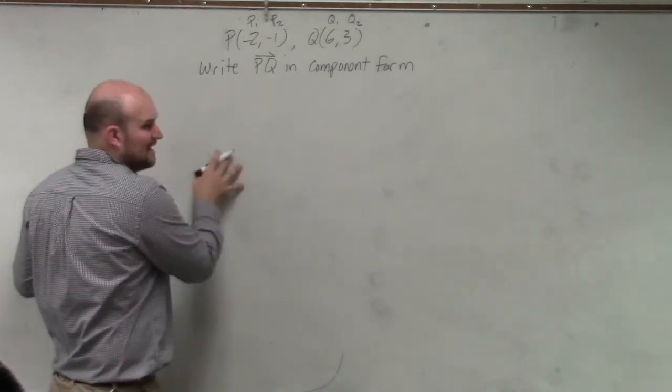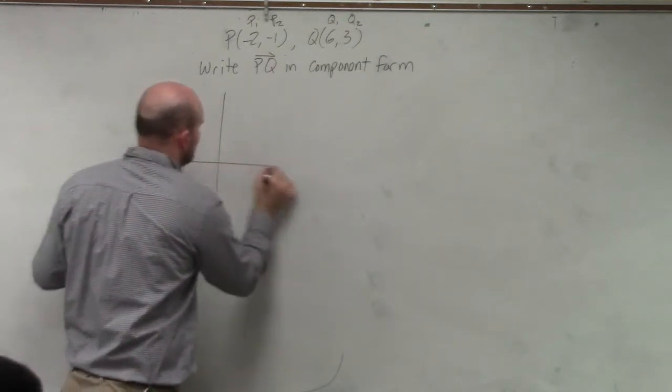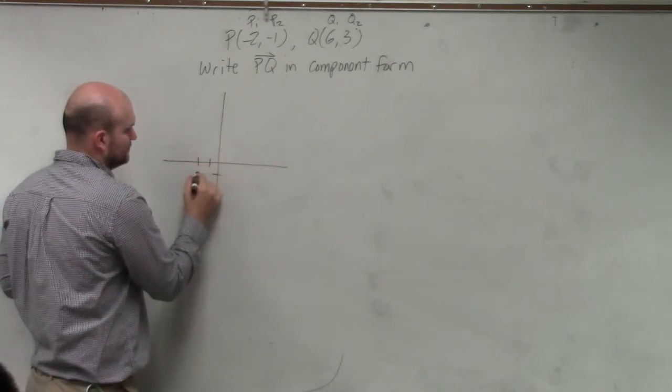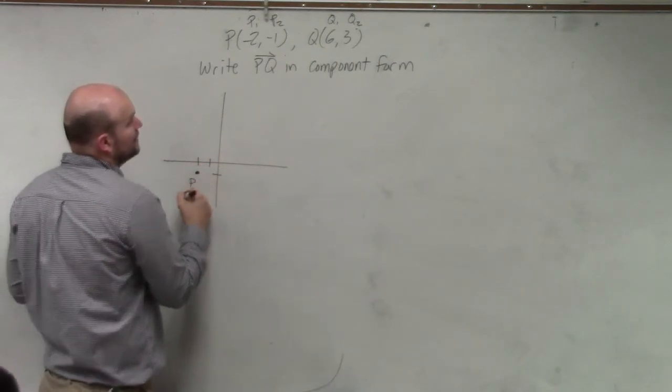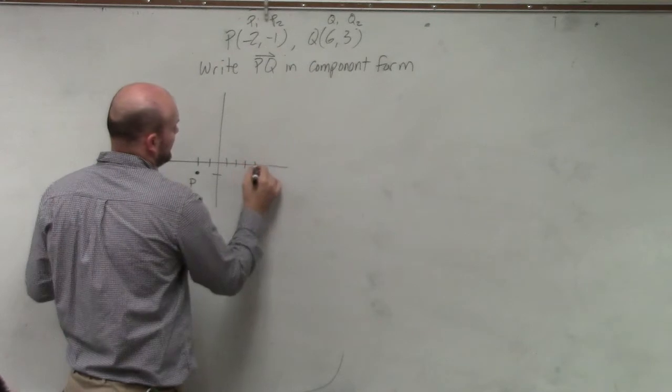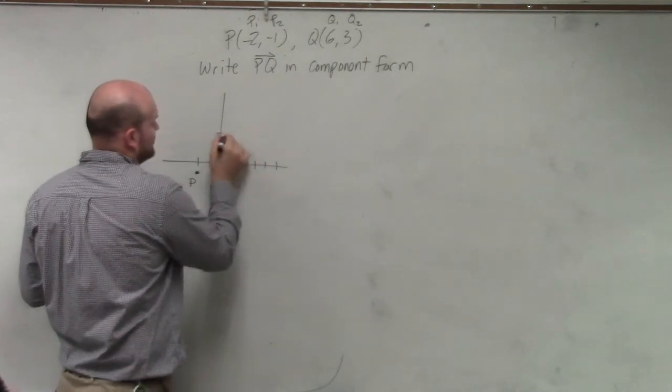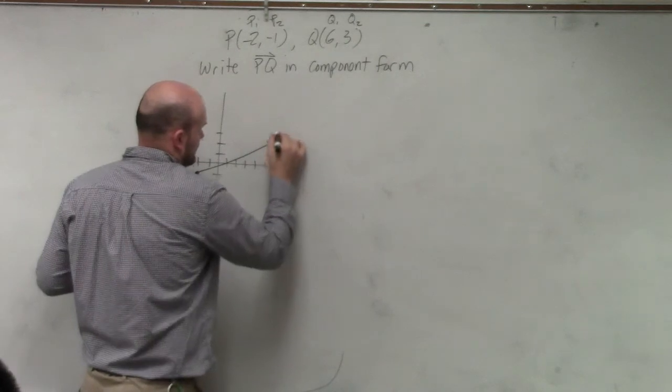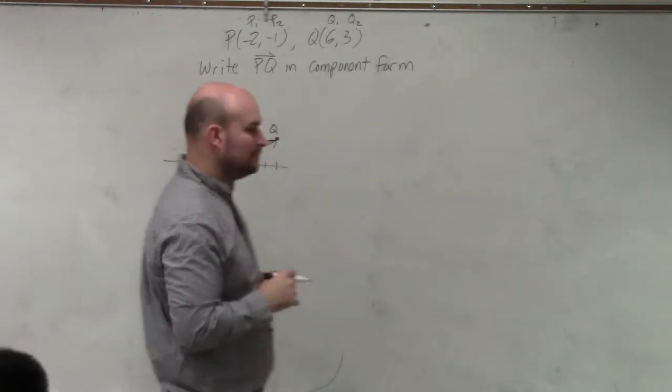Now, the first thing that makes sense is I'm going to graph my P and my Q. So P is at negative 2, negative 1, and Q is at 1, 2, 3, 4, 5, 6... 1, 2, 3. So that's what PQ looks like.